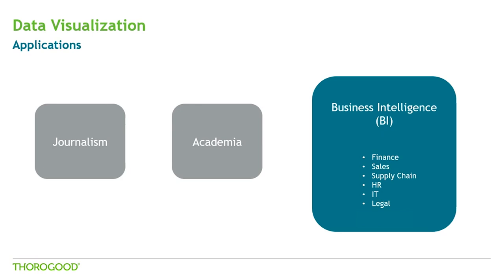Academia is another very important application, and it's where you see a lot of the more complex visuals, which are intended for audiences that are going to do very detailed analysis. You publish a study in a paper and choose visualizations to help present your findings. By the way, this is where the whole field of data science came from — it started in academic environments.